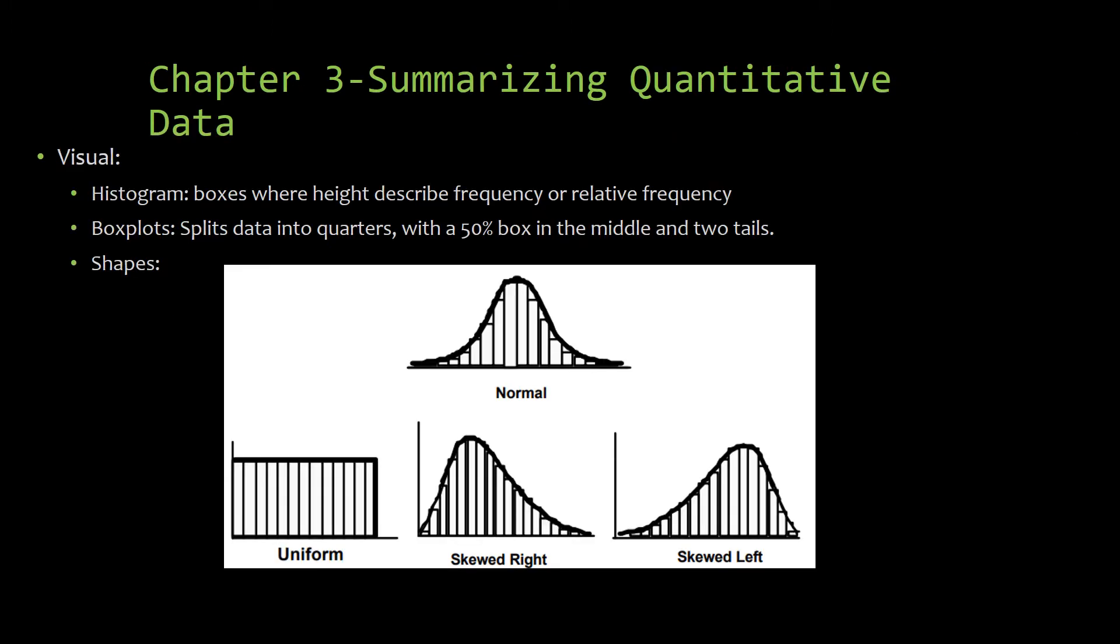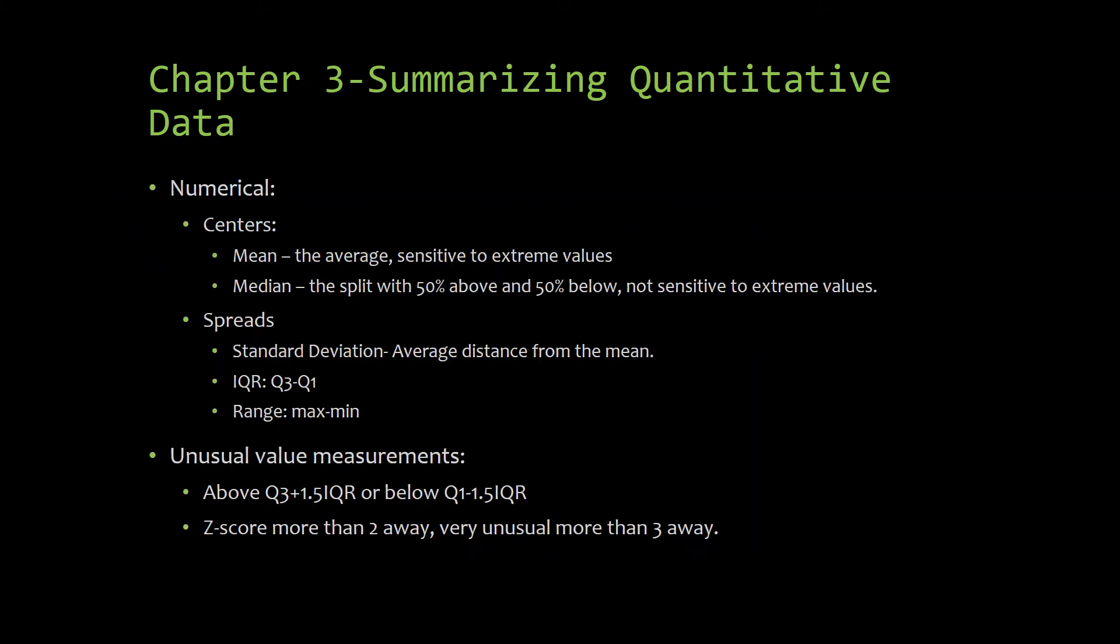Then we moved on to quantitative data and we said, oh my gosh, this is so much more complicated. How can I summarize this? When it comes to looking at graphs of quantitative data, there's three things I need to tell you: shape, center, spread. Here's some common shapes that we've talked about.